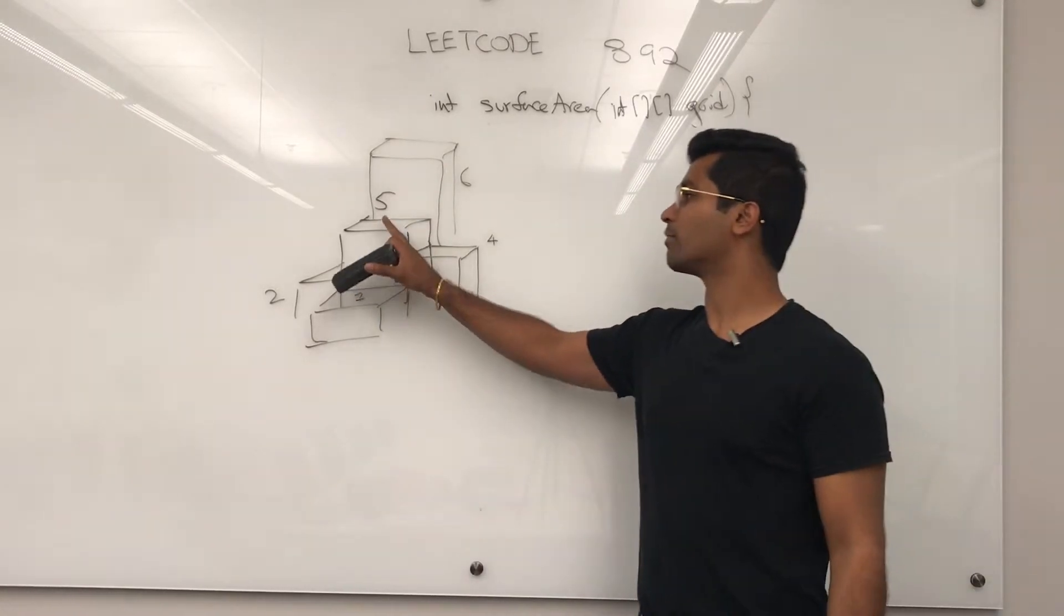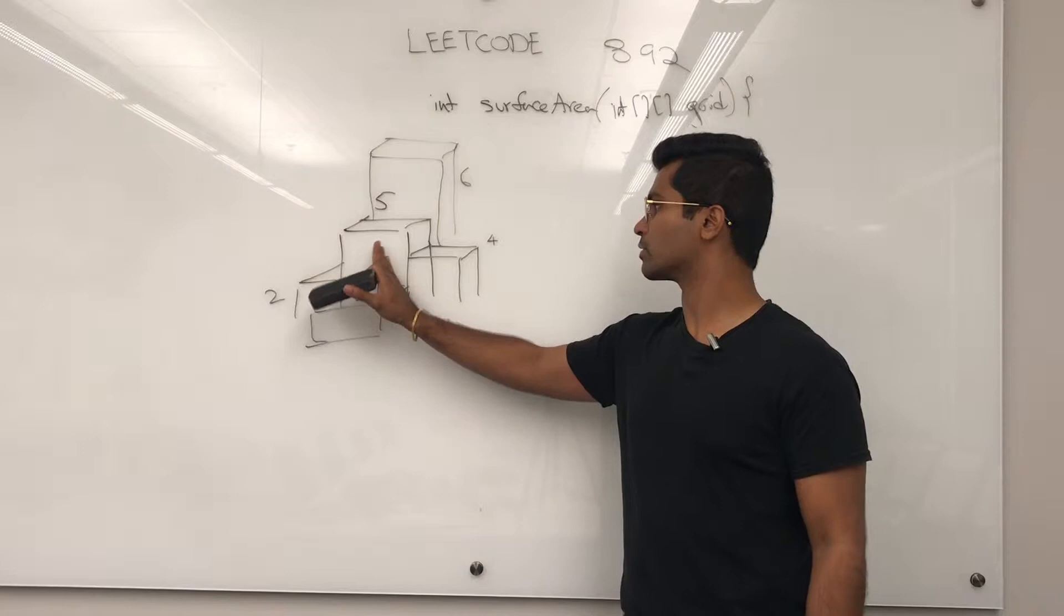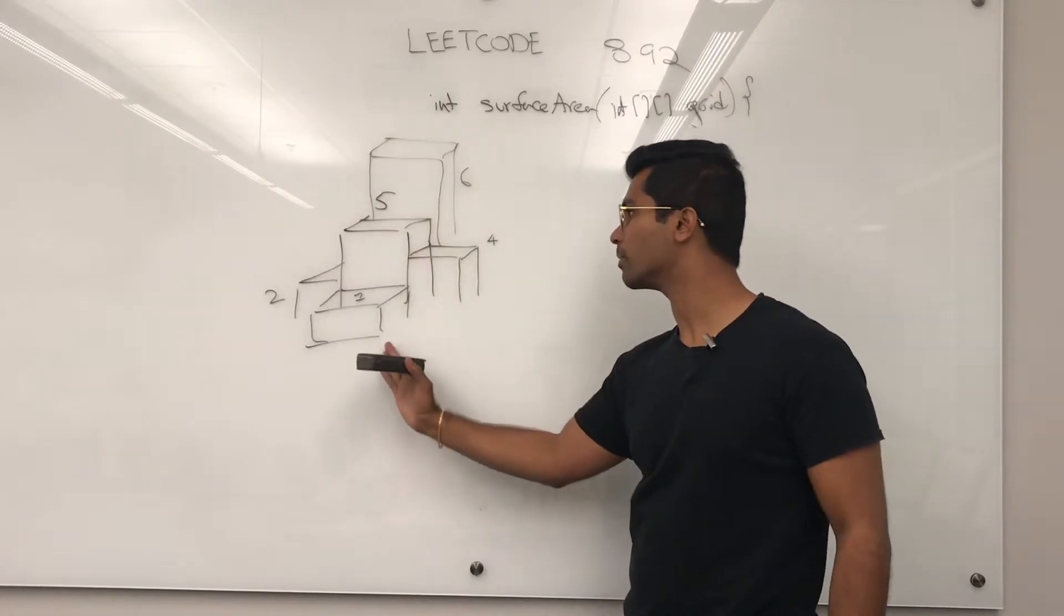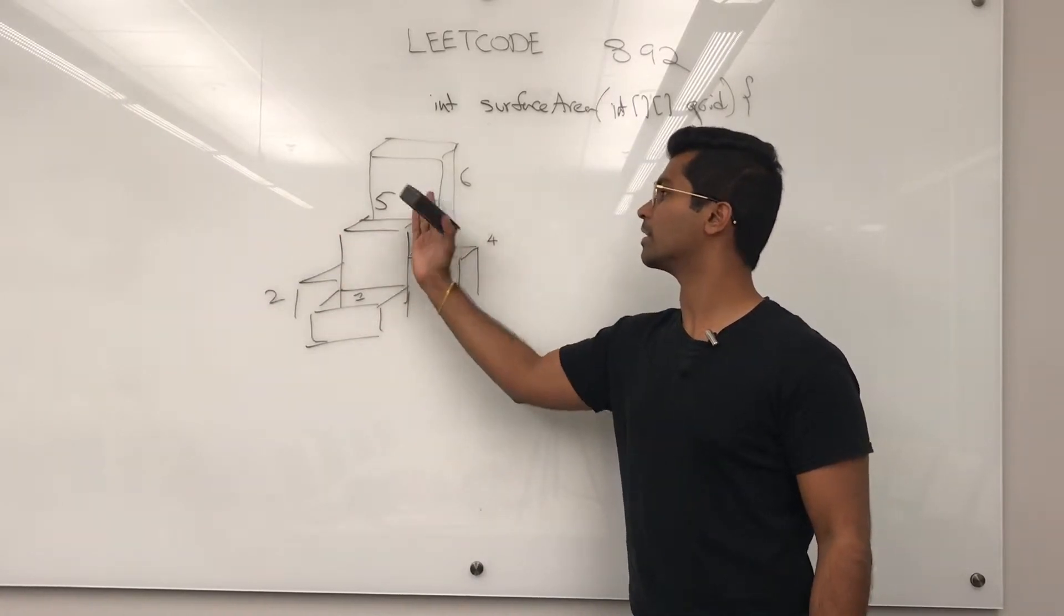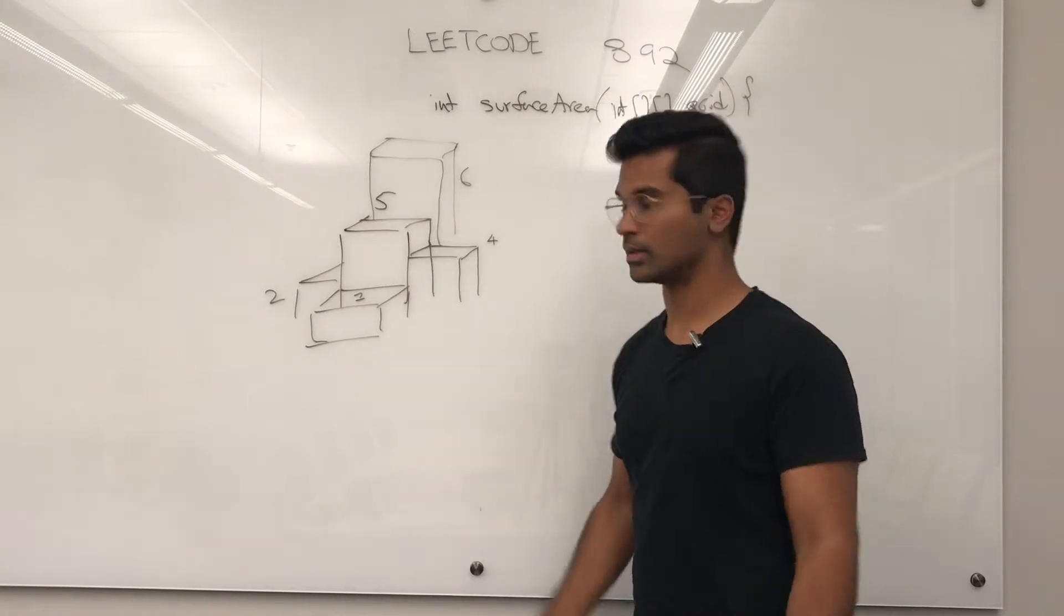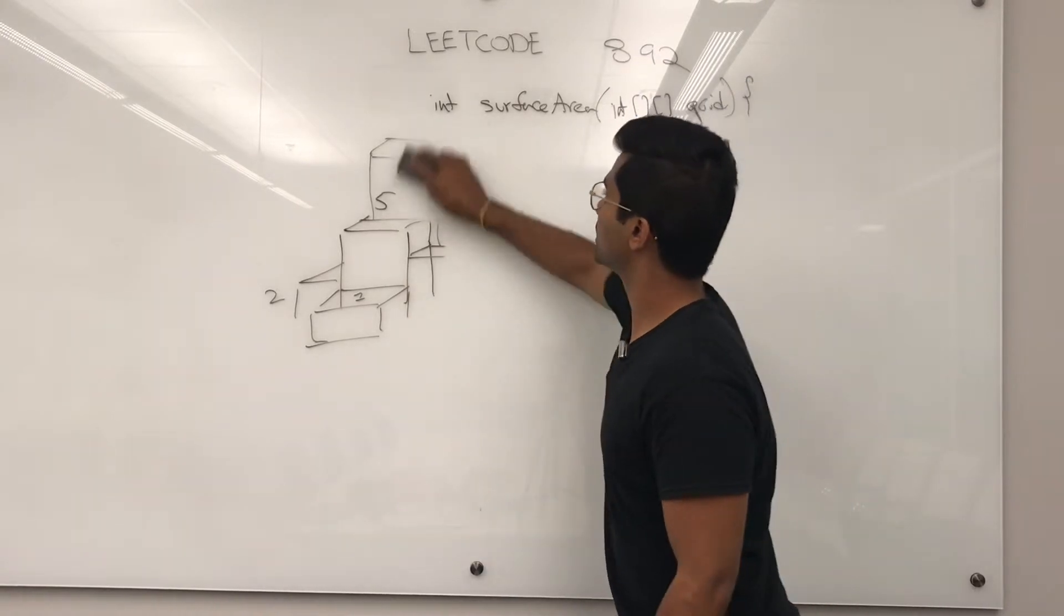So when we're looking at 5, we want to calculate surface area here, the top, the bottom, the right side, the left side, and if it's less than then on the back as well. So let's get into it.